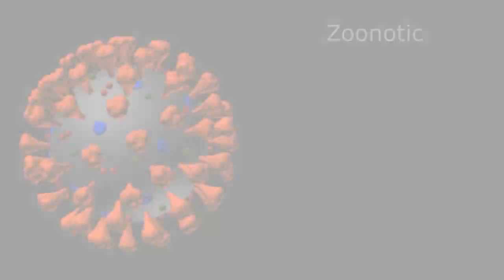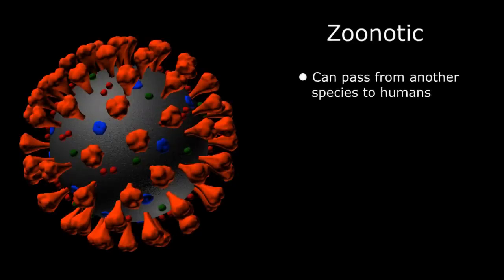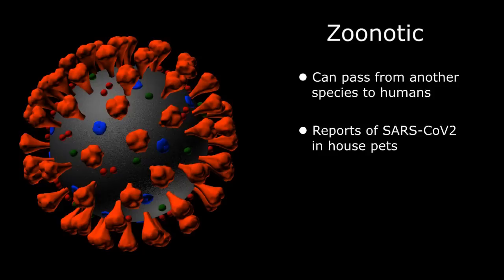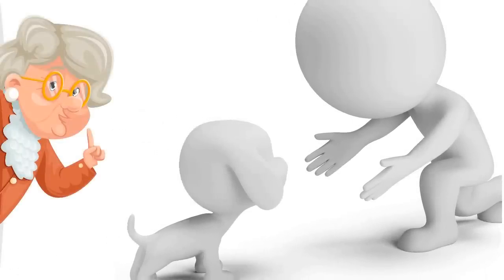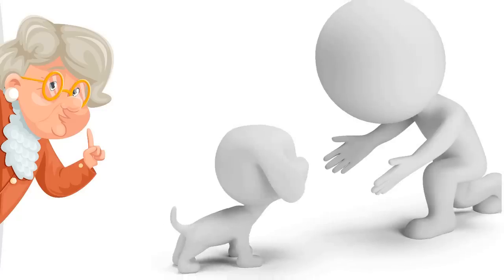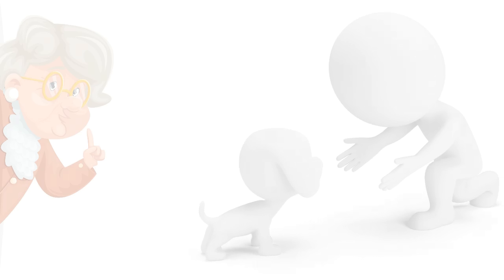Coronavirus is zoonotic, meaning it can pass from another species to humans. There are anecdotal reports of house pets harboring SARS-CoV-2. Until the data is definitive, it may be prudent to avoid face and mouth licks from grandma's dog, especially if she just recovered from an illness herself. As always, stay happy, stay healthy, and thanks for watching.